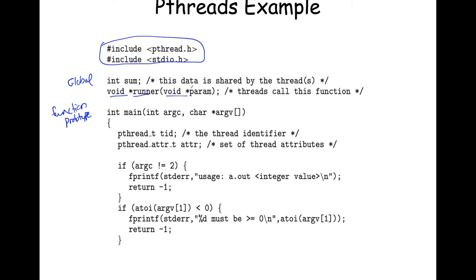When a function is going to be the entry point for a thread, it has to have a specific prototype. It returns void star, because it can return anything via pointer. It has a function name - runner in this case, though it can be anything. It takes a single void star parameter. If you need multiple parameters, you pass a pointer to a C struct, a user-defined collection of types, handling both single and multiple parameter cases.